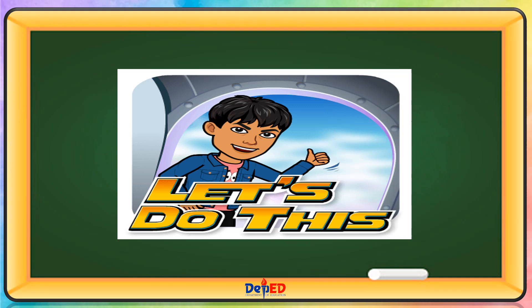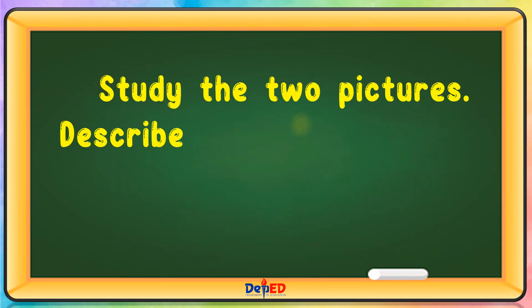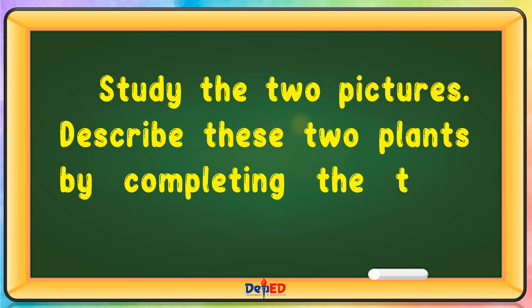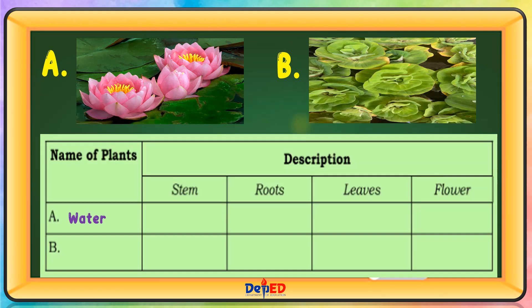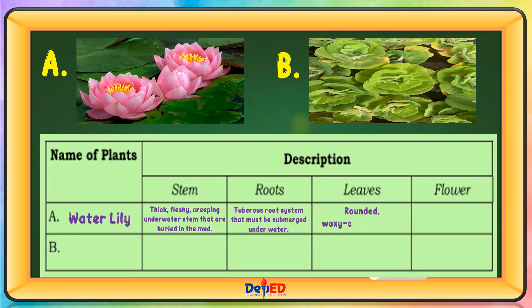Let's do this. Study the two pictures. Describe these two plants by completing the table below. Name of plants: Water lily. Stem: thick, fleshy, creeping underwater stem that is buried in the mud. Roots: tuberous root system that must be submerged under water. Leaves: rounded, waxy, coated leaves. Flower: cup-like flower with numerous petals.